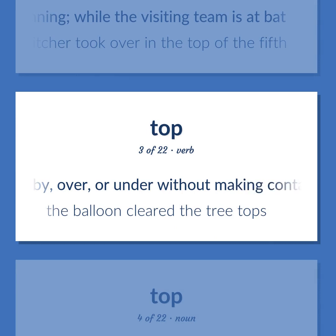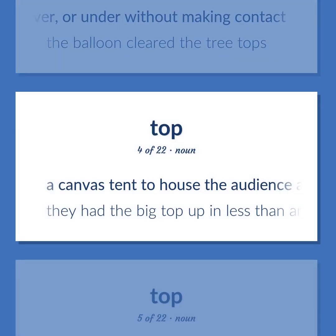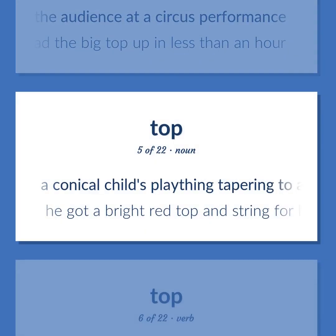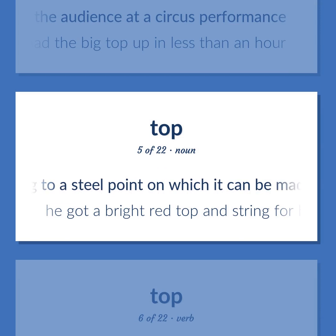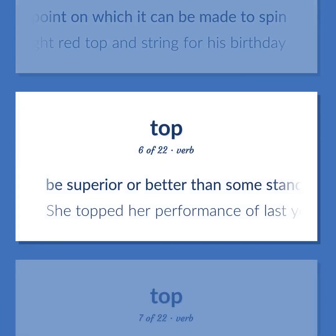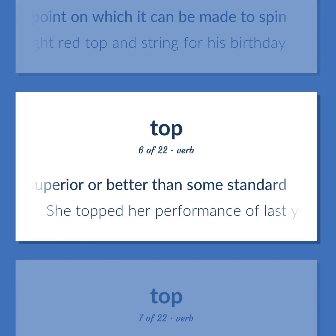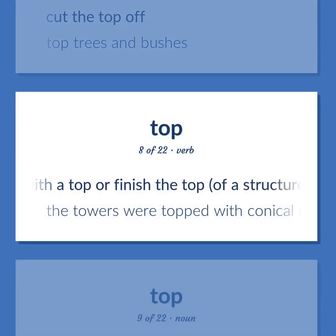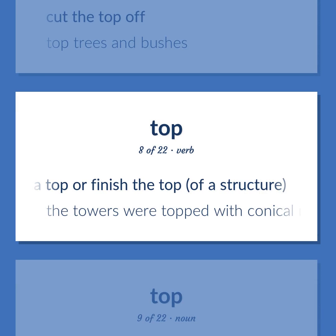Top: Pass by, over, or under without making contact — the balloon cleared the treetops. A canvas tent to house the audience at a circus performance — they had the big top up in less than an hour. A conical child's plaything tapering to a steel point on which it can be made to spin — he got a bright red top and string for his birthday. Be superior or better than some standard — she topped her performance of last year. Cut the top off — top trees and bushes. Provide with a top or finish the top of a structure — the towers were topped with conical roofs.